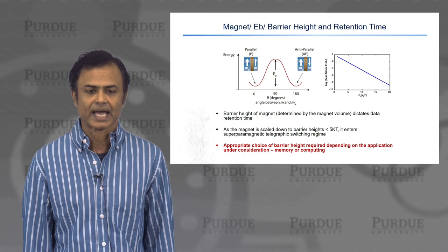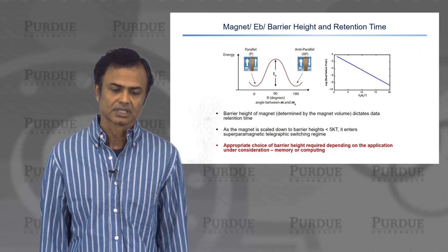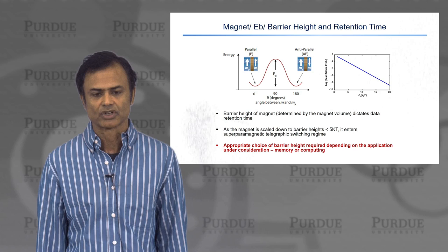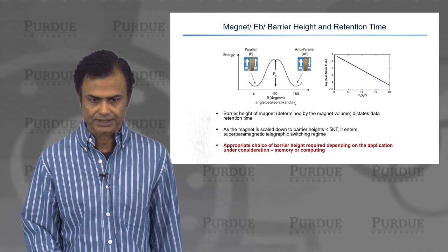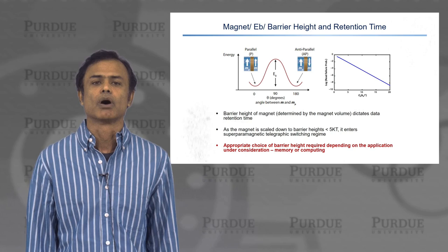For stochastic computing applications, you can go to lower barrier heights of about 20 to 25 kT to have reliable operation of these stochastic computing devices. Appropriate choice of barrier height is required depending on the kind of application you're targeting.